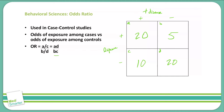Now we can do our calculations. A is 20, multiplied by D which is 20, divided by B which is 5 times C which is 10. We get 400 divided by 50, which equals 8. This means it is 8 times more likely for someone with a history of smoking to have cancer than someone without a history of smoking — comparing the odds of exposure among cases versus controls.